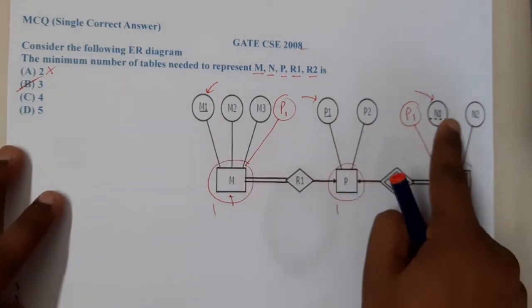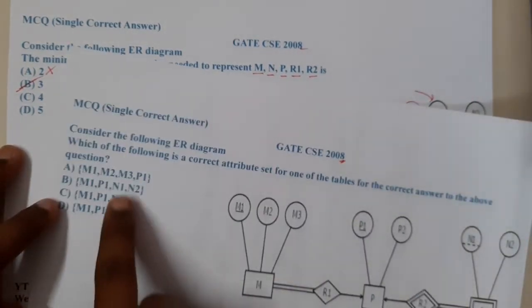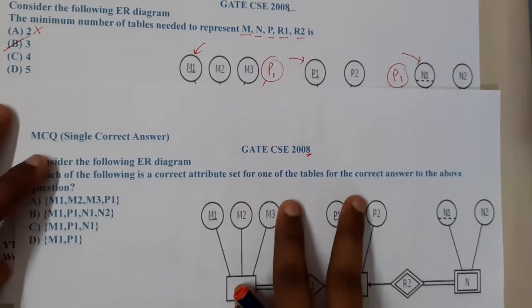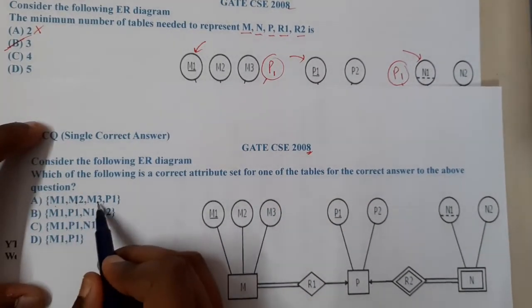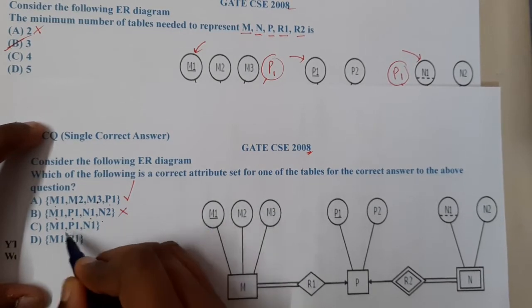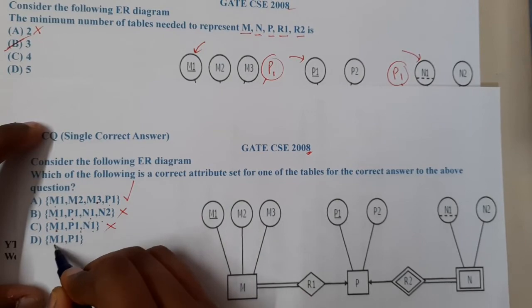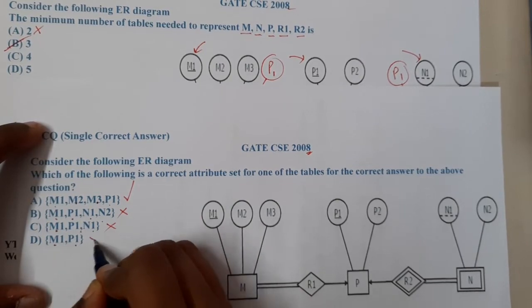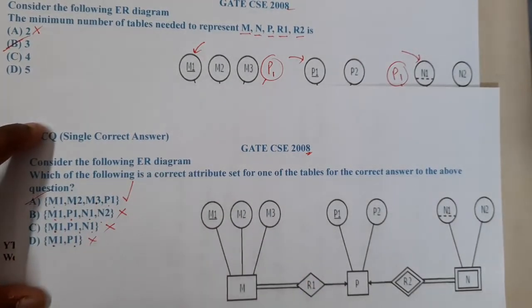Now they are saying which of them will match to this list. So let's start matching: M1, M2, M3, P1 - this is matching. M1, P1, N1, N2 - not matching. M1, N, P1, N1 - not matching. M1, P1 - not matching. So option A is the correct answer.